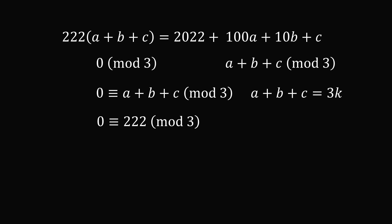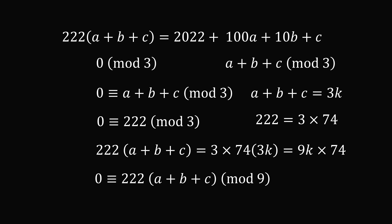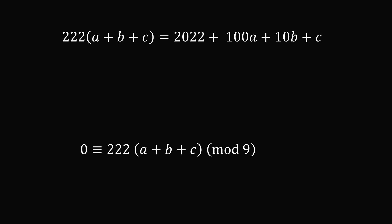We also have 222 is equal to 0 mod 3, because 222 is equal to 3 times 74. If we take the product of 222 and the sum of A, B, and C, we will get 3 times 74 times 3K, which equals 9K times 74. This means this product is a multiple of 9. So this product is equivalent to 0 mod 9. So if the left hand side of the equation is equal to 0 mod 9, let's take the right hand side of the equation modulo 9.